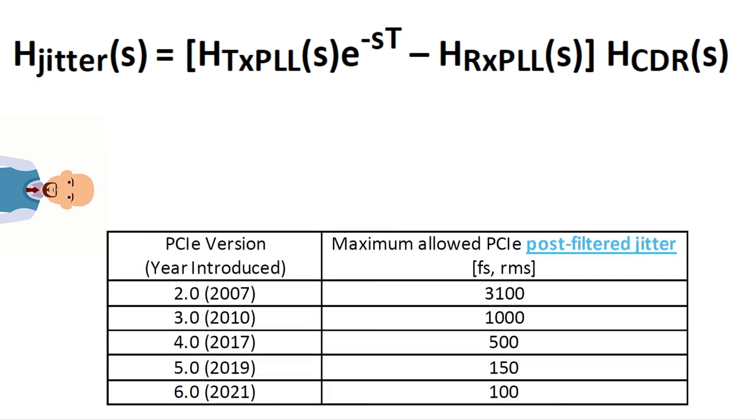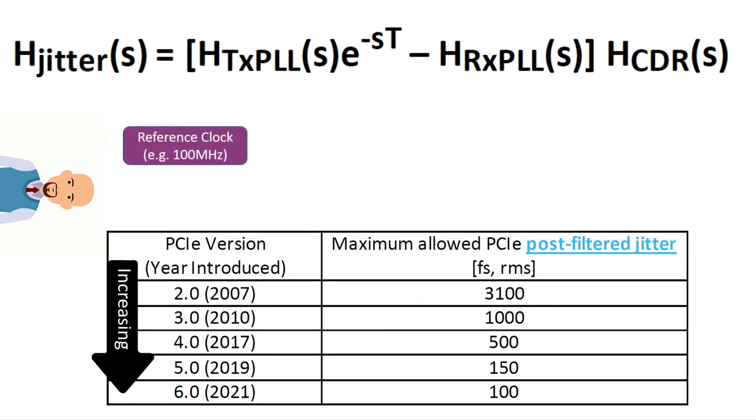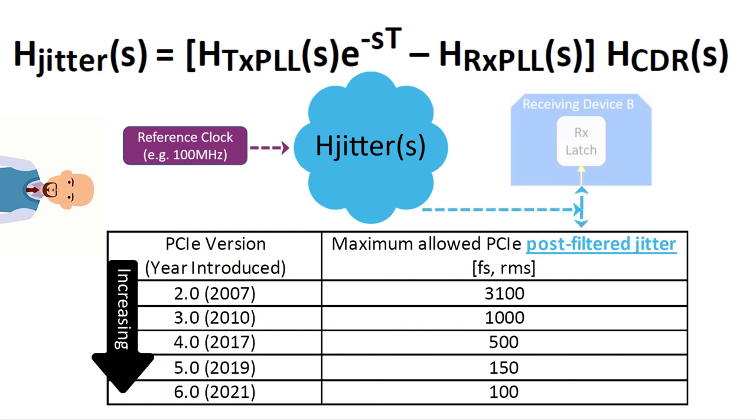As PCIe lane speeds have increased with each successive PCIe version, the magnitude of the allowed RMS jitter has had to decrease in order to maintain acceptable bit error rates.